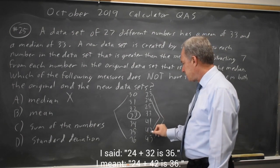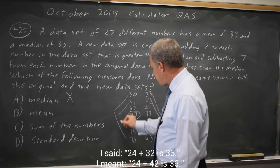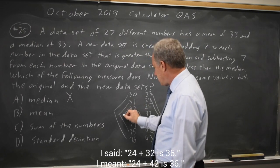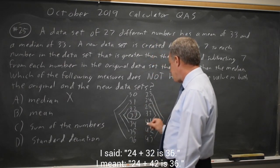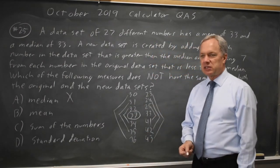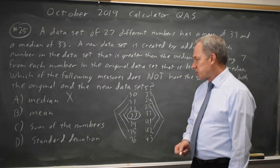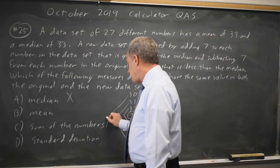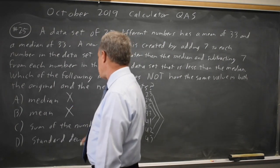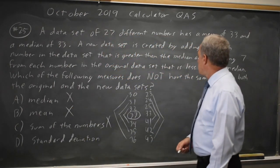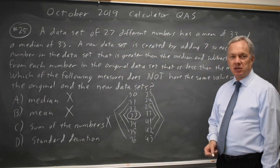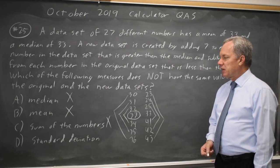Similarly, 24 plus 32 is 36. 31 plus 35 is 36. Those haven't changed. 32 plus 34 and 25 plus 41 add to 36. The sum of the numbers is still the same, which means the mean is still the same. So which does not have to be the same would be none of those three. All three have to remain the same.